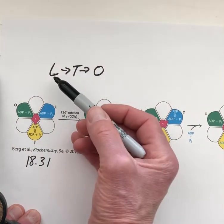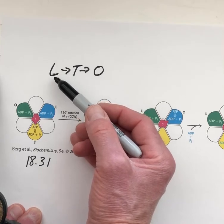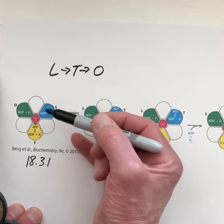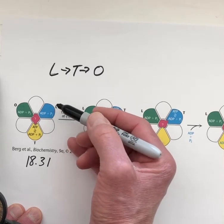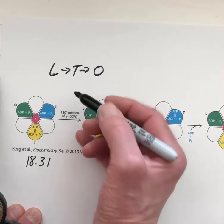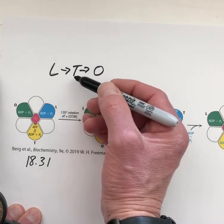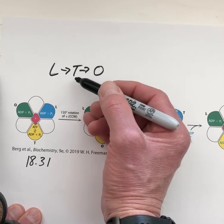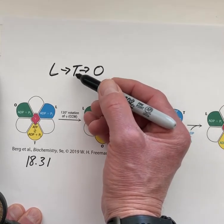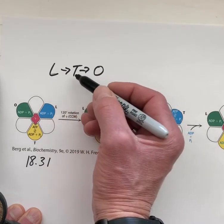The L state, you can think of as the loose state. It is able to bind ADP and inorganic phosphate relatively neutrally. The T state binds very tightly to ATP, and in the T state, ATP is the preferred nucleotide. So we're making ATP when we transition from L to T states. But that ATP is held so tightly that it's not usable. It's just a stoichiometric reaction.